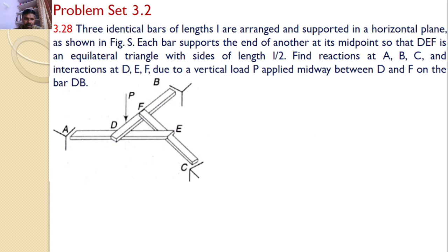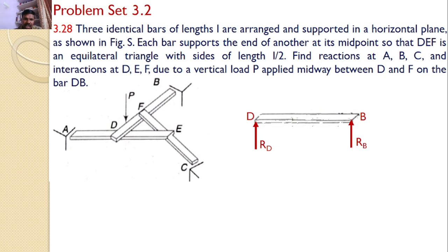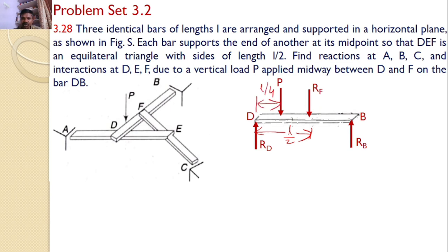First, let us consider the bar BD. At B, there is a support, hence I can find a reaction at B. And at D, it is just placed on the bar AE, hence I can find a reaction at D. And at F, there is a reaction force from the bar CF, but that acts downwards as RF. There is also the applied force P. Since F is the midpoint, this distance is L/2, and P acts at a distance of L/4 because P is acting at the midpoint of DF.